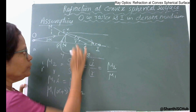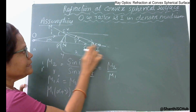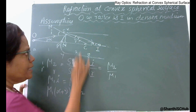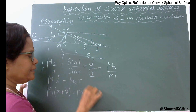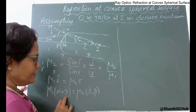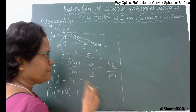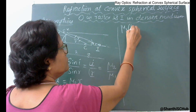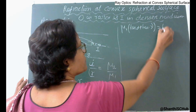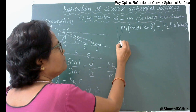For the other angle: r is an interior angle of triangle ECI, so r + beta = gamma, which gives r = gamma − beta. Writing alpha, gamma, beta in terms of tan (valid for very small angles), the equation becomes: mu1 × (tan alpha + tan gamma) = mu2 × (tan gamma − tan beta).